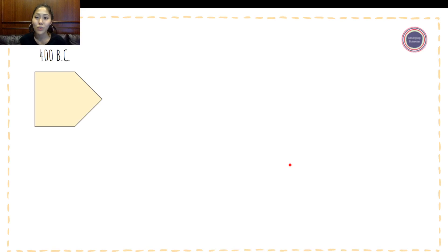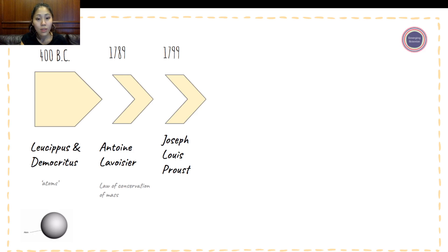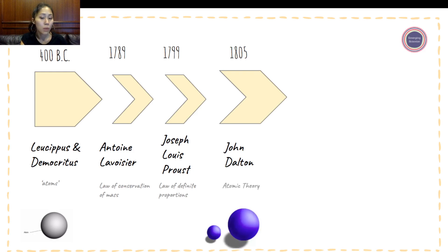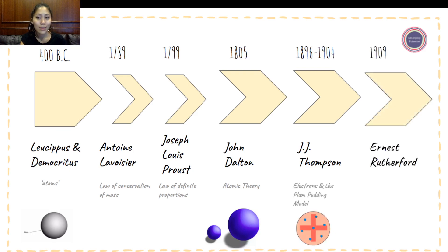So again, just to cover through the entire period of time on how an atom is what we see now with a positive center and electrons around it, it came from Leucippus and Democritus in coming up with the concept of defining atoms from matter in 400 BC. Then Antoine Lavoisier coming up with the law of conservation of mass in 1789. Then Joseph Louis Proust coming up with the law of definite proportions in 1799. Then John Dalton came about in 1805 and came up with the atomic theory that composes of four theories. In 1896 through to 1904, JJ Thompson came up with the electrons and the plum pudding model. And in 1909, Ernest Rutherford came up with the nucleus and the gold foil experiment.